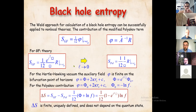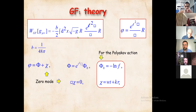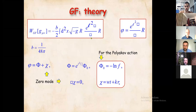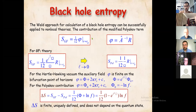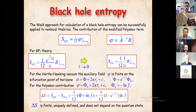Let us consider black hole entropy. It can be easily calculated: for this type of Lagrangian, using the Wald approach, you vary over the Riemann tensor and then evaluate the result as an integral over the horizon surface. The Wald prescription is valid not only for local theory but also for theories with higher derivatives, non-linear in curvature, and it remains valid for non-local theories with an infinite number of derivatives. The result is that the ghost-free entropy contribution of the Polyakov action to the two-dimensional black hole has exactly this form, where φ is our auxiliary field.